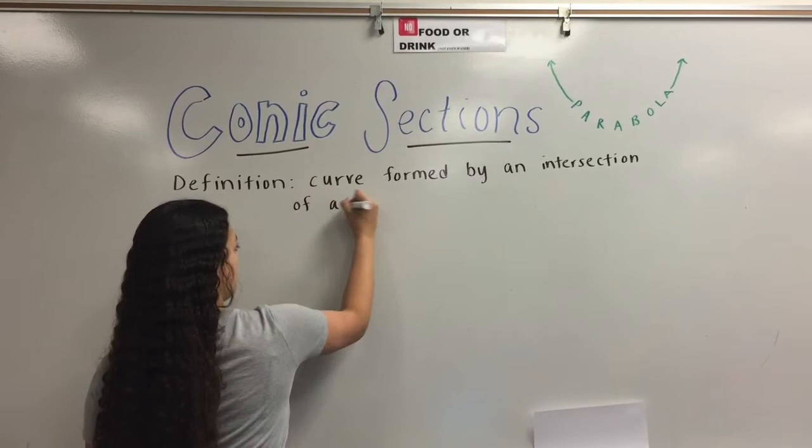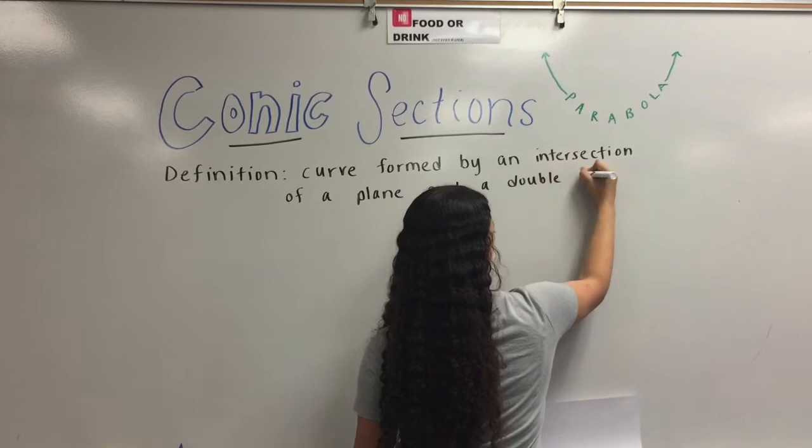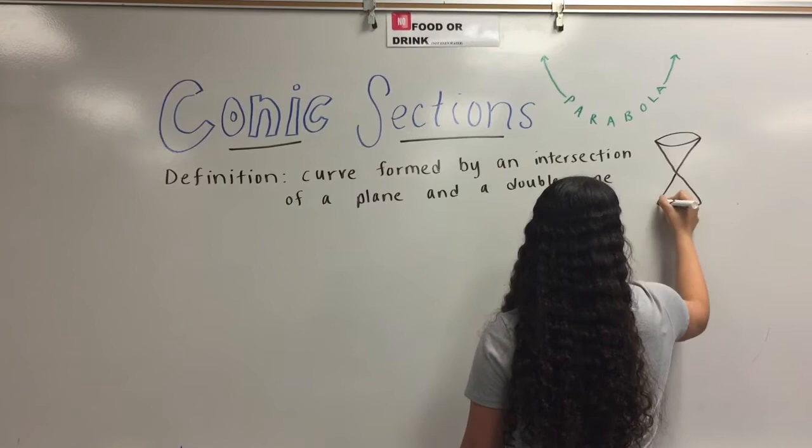Before we review parabolas, we must define conic sections. The definition of a conic section is a curve formed by an intersection of a plane and a double cone, as described by this picture.